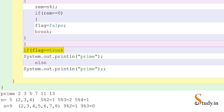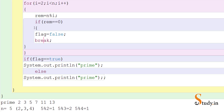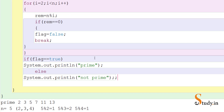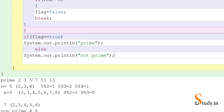The break brings us out of the for loop. Now is the value of flag true? No — we changed it to false. So it goes into the else branch and prints that it is not a prime number. Let's correct the print statement, delete any leftover code, and save the program.